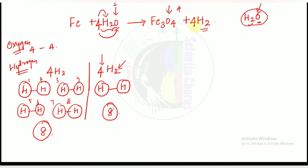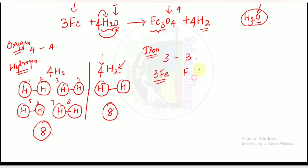Now let us balance iron. On the right we have Fe₃, meaning 3 iron atoms. On the left we have just Fe. So we add the coefficient 3: write 3Fe. Iron is now balanced — 3 on each side. The complete balanced equation is: 3Fe + 4H₂O → Fe₃O₄ + 4H₂.